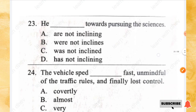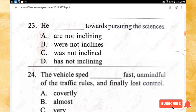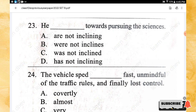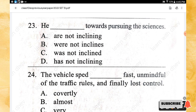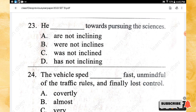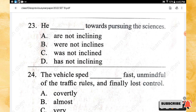Question 23: He _____ towards pursuing the sciences. Options: are not inclining, where not inclines, was not inclined, has not inclining. The right answer is option C — was not inclined.